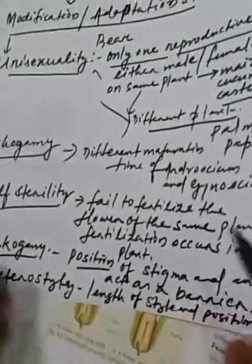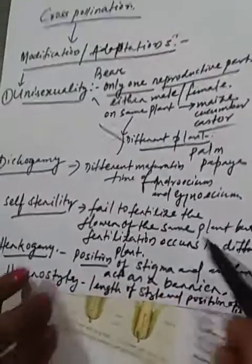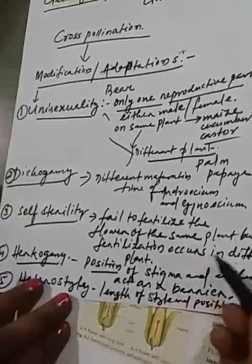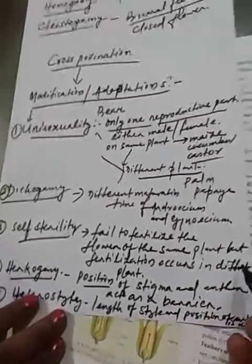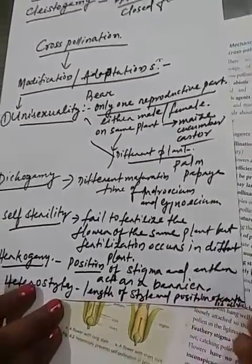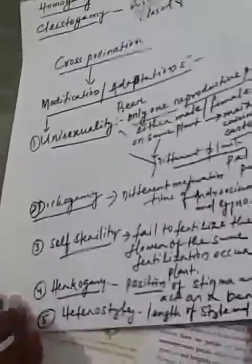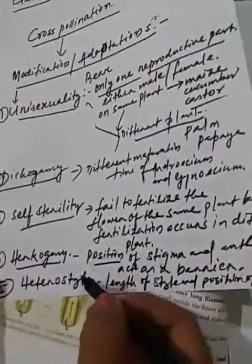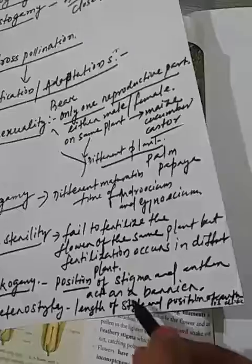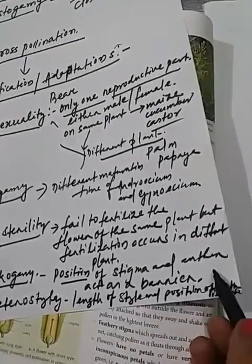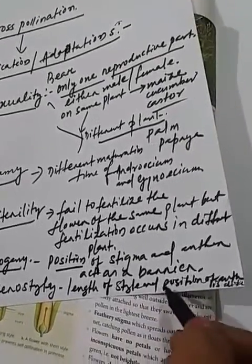The third one is self-sterility. Self-sterility means the failure to fertilize the flower of the same plant, but fertilization occurs in a different plant.